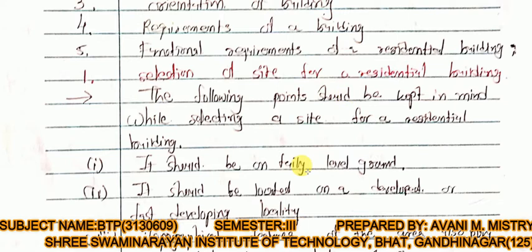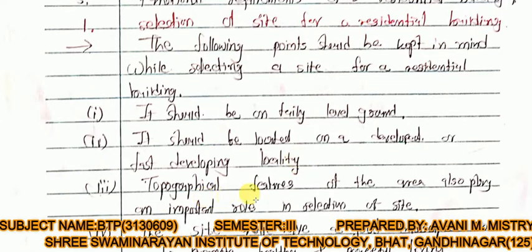Topographical features of the area also play an important role in the selection of the site. For example, if the site is sloped or undulating, leveling work will be required first. Topographical features — meaning the physical characteristics of the area — significantly affect site selection, including undulations which are also called topographical features.